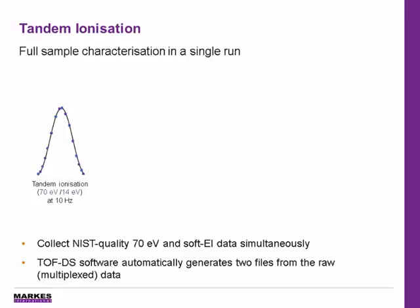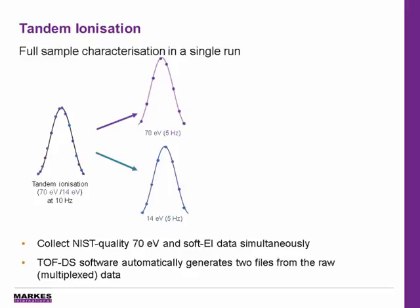However, some components remain difficult to identify based solely on the 70 eV data, such as isomers or compounds with extensive fragmentation. In this case, tandem ionization can provide a solution. Both 70 eV and soft EI data are acquired simultaneously, providing two perfectly aligned chromatograms with complementary spectral information.